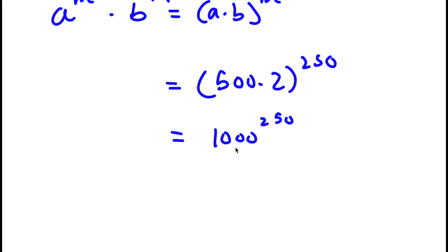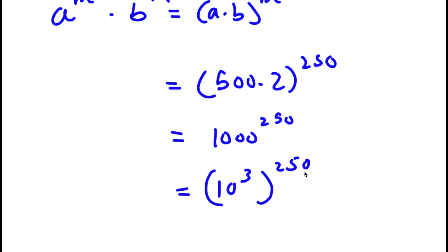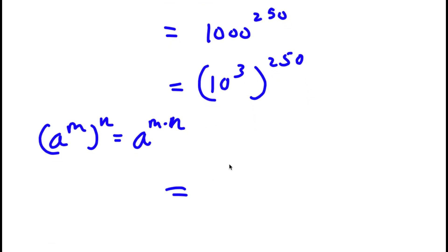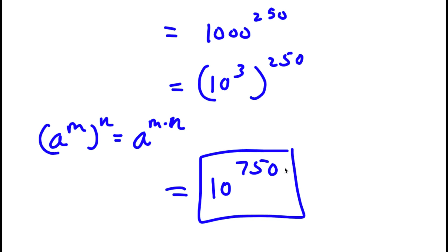Now, 1,000 is the same thing as 10 to the power of 3. So now I have 10 to the power of 3 to the power of 250. If I have something in the form a to the power of m to the power of n, this is equal to a to the power of m times n. So 10 to the power of 3 to the power of 250 equals 10 to the power of 3 times 250, which is simply 10 to the power of 750. So this is my answer.